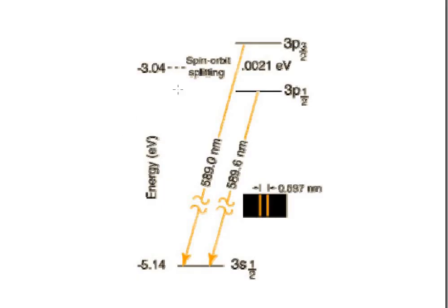Regarding sodium doublet origins: the transitions are 3p₁/₂ and 3p₃/₂. The reason we get a sodium doublet is spin-orbit interaction. Had there been no spin-orbit interaction, we would not observe the doublet. This is sometimes asked in the experiment as well — remember these facts.